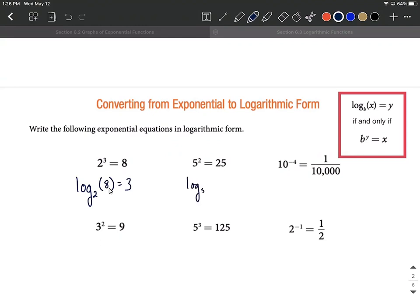The next one we have is five to the second equals 25. A little bit different looking one on the right hand side: 10 to the negative fourth equals one ten thousandth. But all we need to do is just be careful.